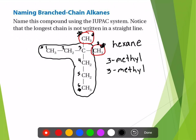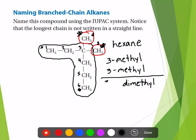Rule number four says that if a group appears more than once, you have to give the appropriate prefix: di, tri, tetra, et cetera. So we have two methyl groups — instead of saying methyl methyl, we can make that dimethyl. But we still have to identify the number. Rule number four continues: if two or more of the same group are attached to the same carbon atom, the number is repeated. So you can't just say three-dimethyl — you have to say 3,3-dimethyl because there are two methyl groups both on carbon three. Rule number nine covers punctuation: you always put commas between numbers and dashes between numbers and letters or words. That's why there's a comma between the threes and a dash between the three and the dimethyl.